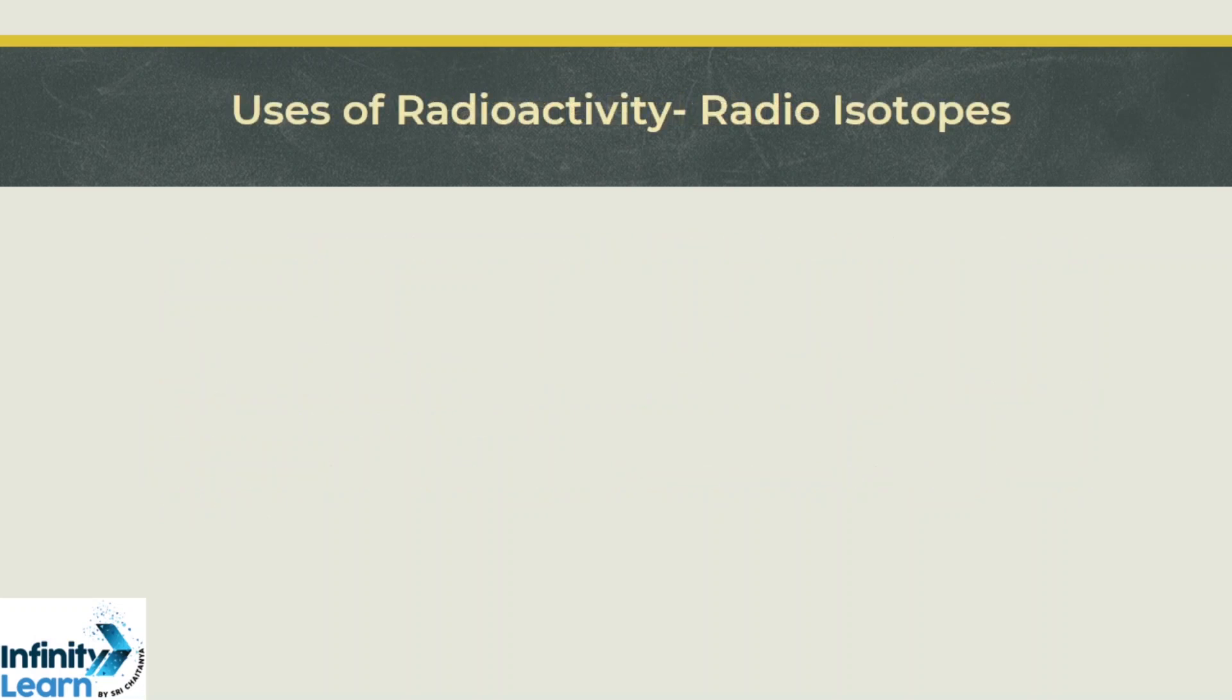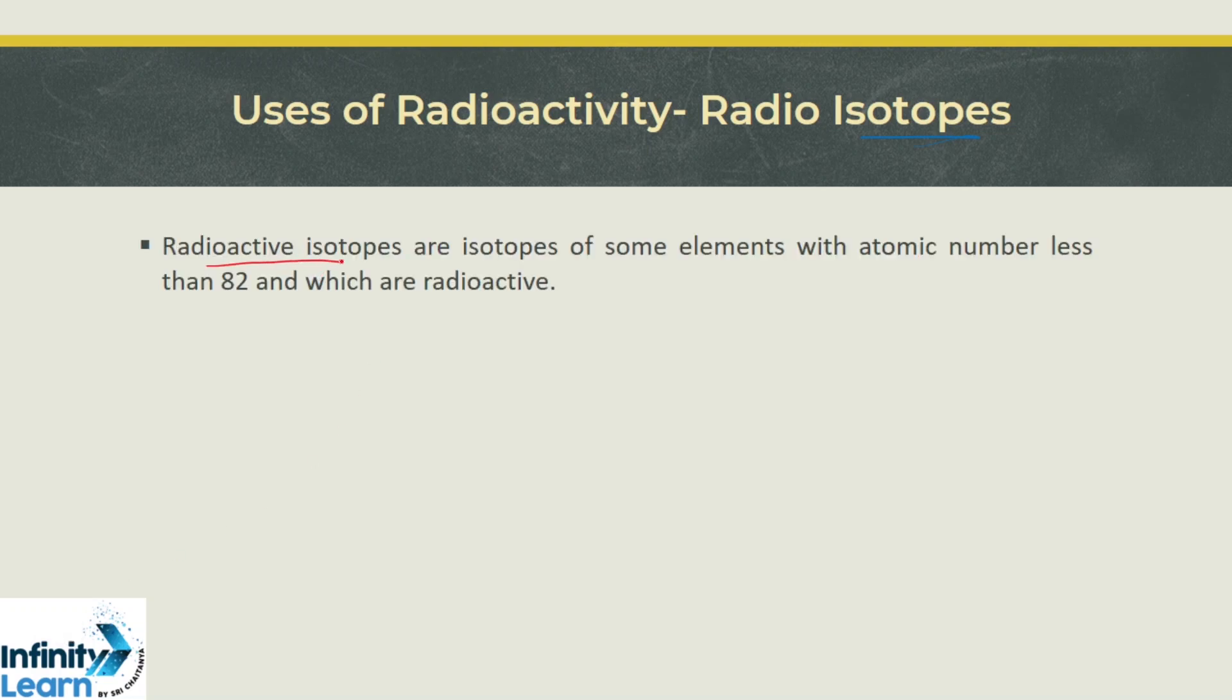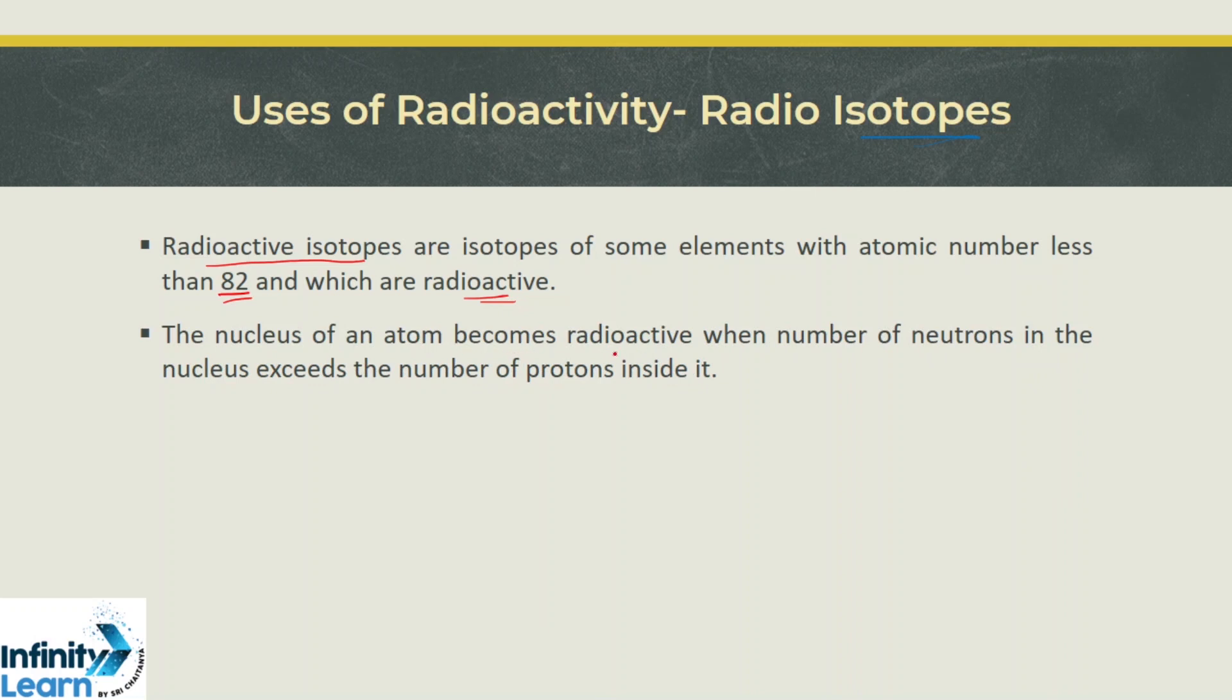Now let us talk about the uses of radioactivity from radioisotopes. Radioisotopes are isotopes of elements with atomic number less than 82 that are radioactive. The nucleus becomes radioactive when the number of neutrons exceeds the number of protons. They can be prepared artificially by nuclear transmutation and are vital in medical, industrial and scientific use.